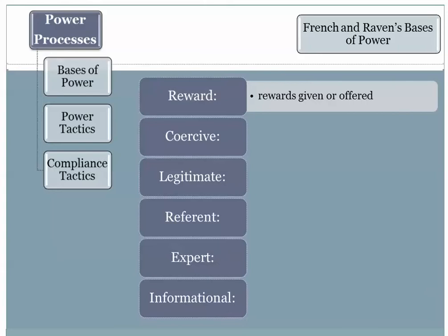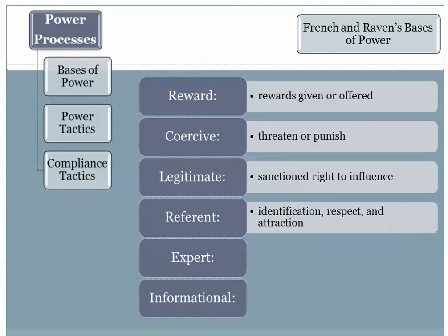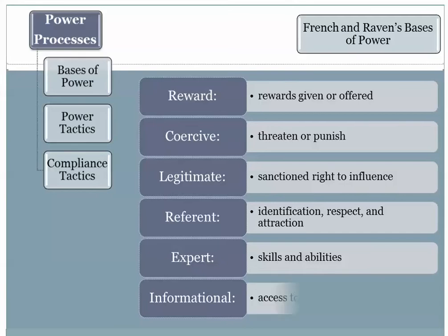French and Raven in the late 1950s developed their classic theoretical statement of the sources of social power. They identified five bases of power: reward power, coercive power, legitimate power, referent power, and expert power. As Dr. Raven continued his work on the analysis of power, he added informational power. The basic idea is that in groups and across a range of social settings, individuals who can control these sources of power — these bases — are more influential than others.